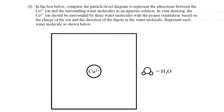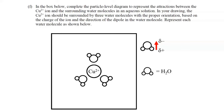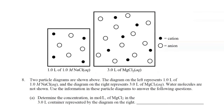Part F involves ion-dipole forces between Cu²⁺ ions and water molecules. A water molecule has a dipole — the hydrogen atoms carry partial positive charge and the oxygen carries partial negative charge due to electronegativity differences. To show the proper orientation, the three water molecules should be arranged with their negative ends — the oxygen atoms — pointing toward the positive Cu²⁺ ion. That is the correct answer to Part F.